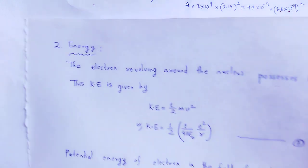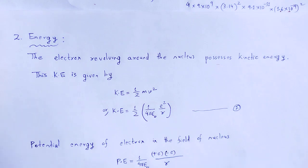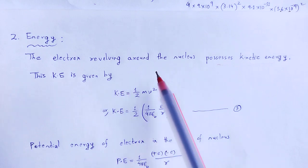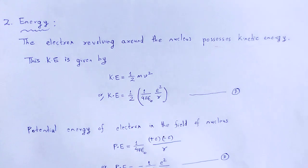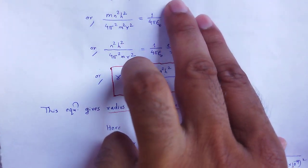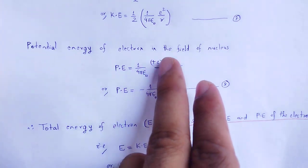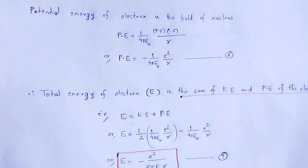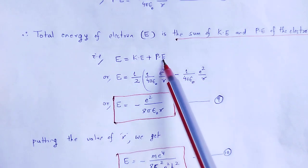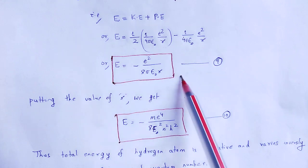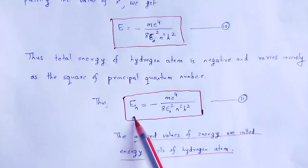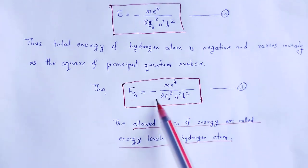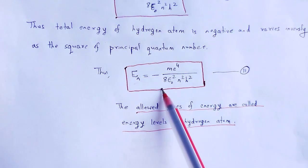Next, energy. The energy of an electron revolving around the nucleus is the sum of kinetic energy and potential energy. Kinetic energy = ½mv²; since mv² = (1/4πε₀)(e²/R), kinetic energy = (1/2)(1/4πε₀)(e²/R). The potential energy of the electron in the field of the nucleus is: PE = −(1/4πε₀)(e²/R). The total energy is the sum of kinetic and potential energy. Putting in the value of R and simplifying, the total energy of the hydrogen atom is negative and varies inversely as the square of the principal quantum number n. The allowed values of energy are called the energy levels of the hydrogen atom.